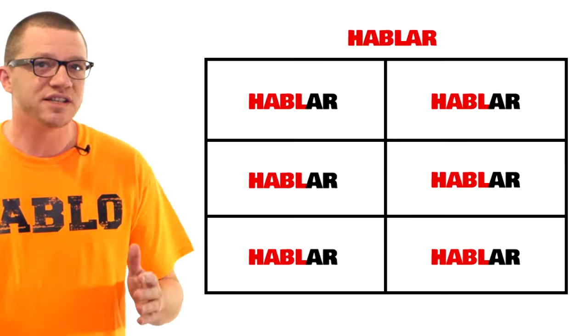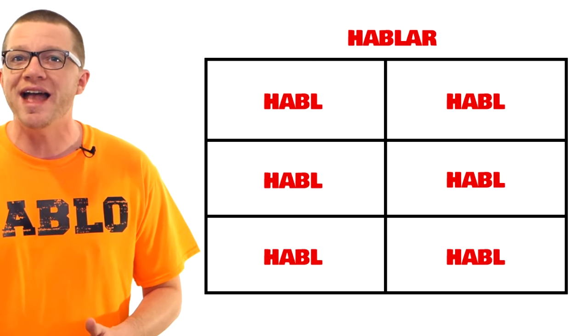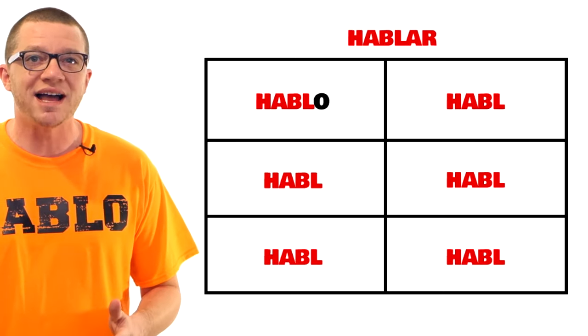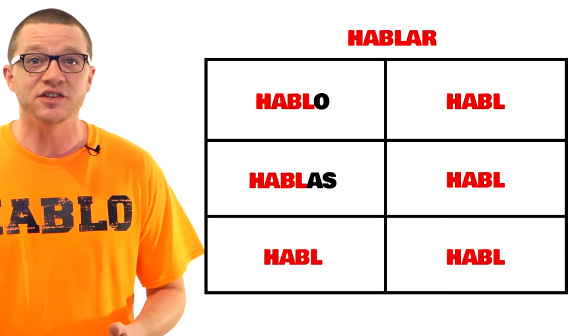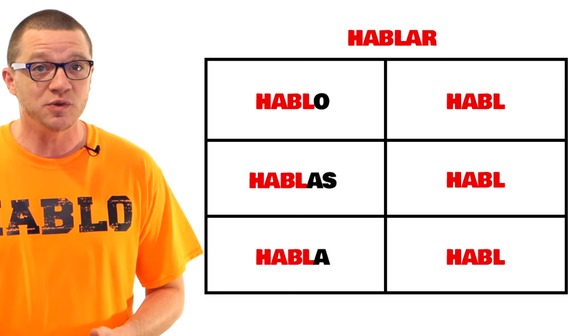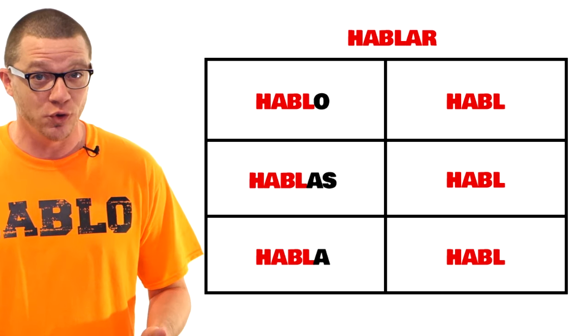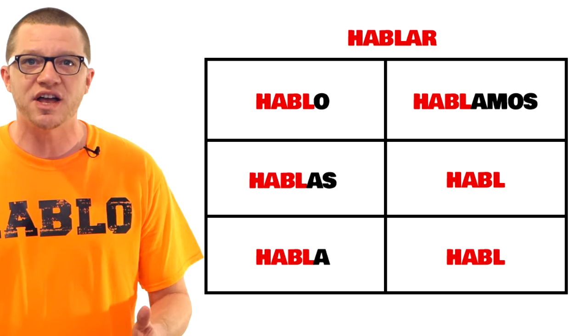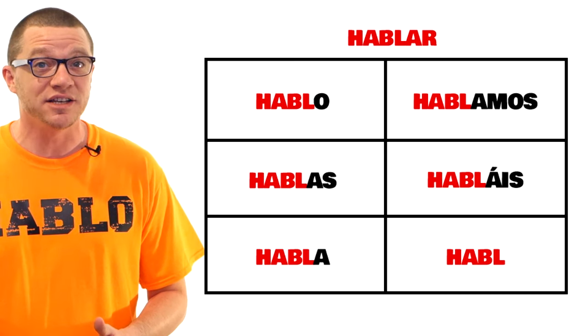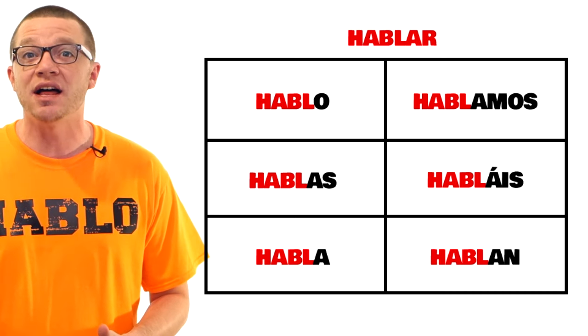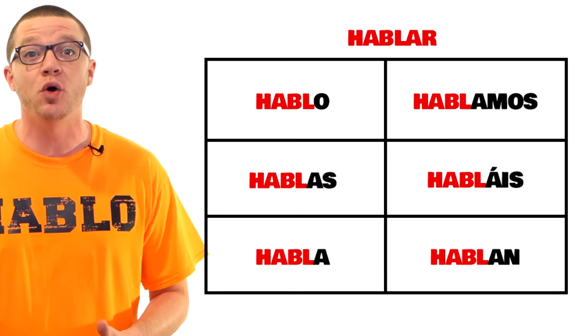There's just one difference. To conjugate an AR verb, you remove the AR from each box, then replace it with the correct ending. These are just rules you have to memorize. Hablo is 'I speak' — that's the only difference between hablar and estar. Remember, estar conjugates to estoy here. Everything else is the same though. Hablas is 'you speak.' Habla is 'he speaks,' 'she speaks,' 'it speaks,' or 'you formal speak.' Then on the other side, hablamos is 'we speak,' habláis is 'you both speak,' then hablán is 'they speak' or 'you both formal speak.'